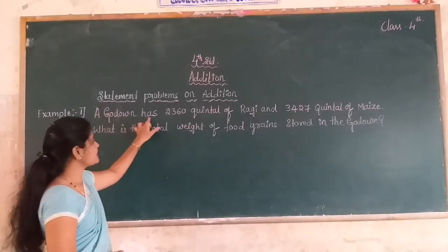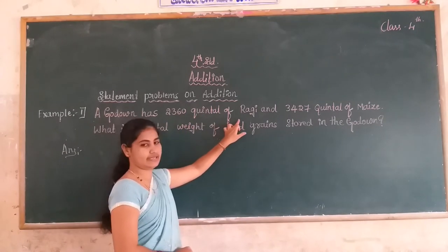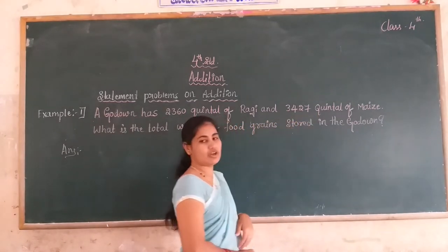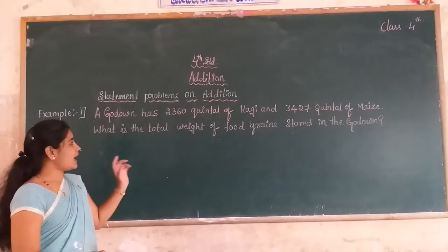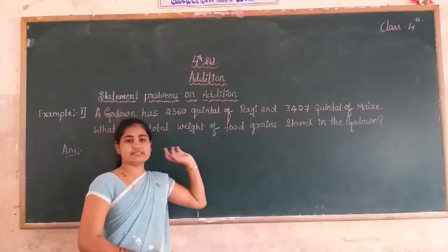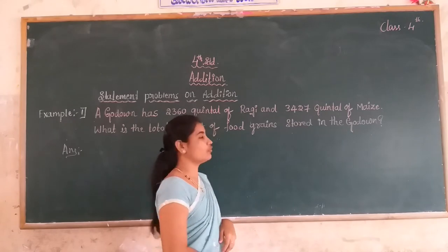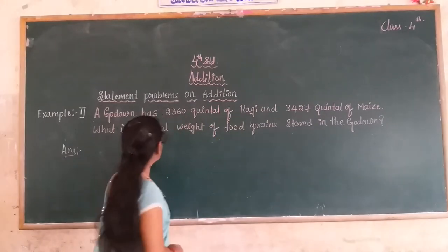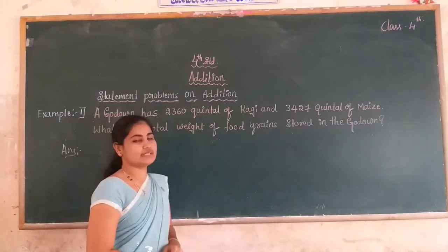A godown has 2,360 quintals of Ragi and 3,427 quintals of Maize. What is the total weight of the quintals stored in the godown?